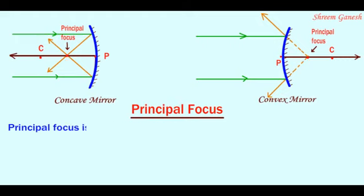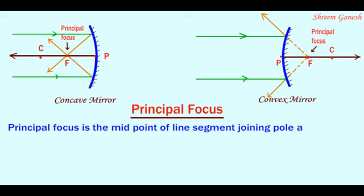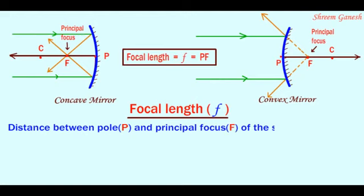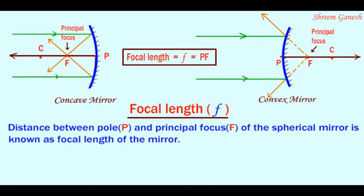Principal focus is the midpoint of the line segment joining pole and center of curvature of the mirror. The distance between pole and principal focus of the spherical mirror is known as focal length of the mirror.